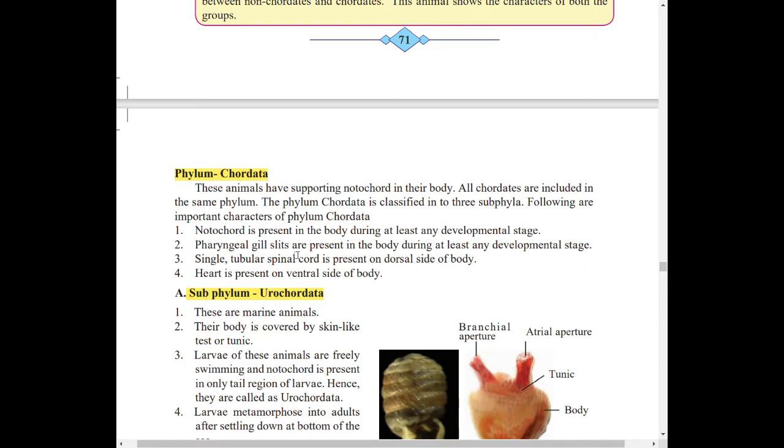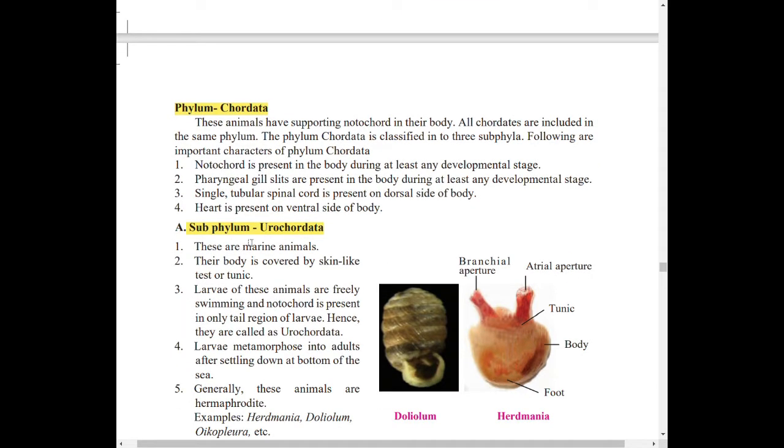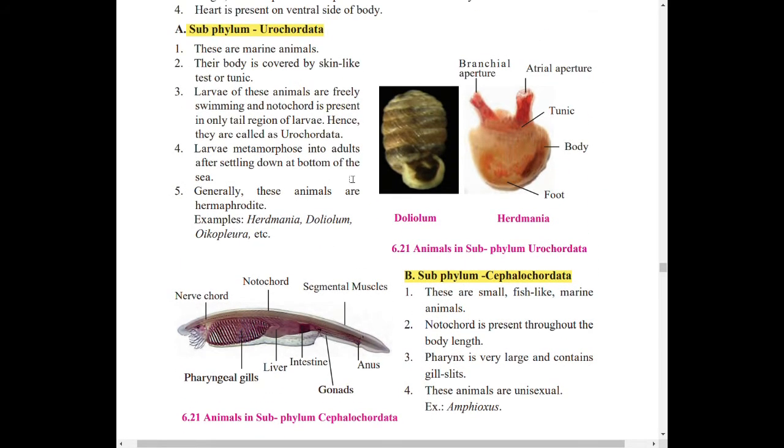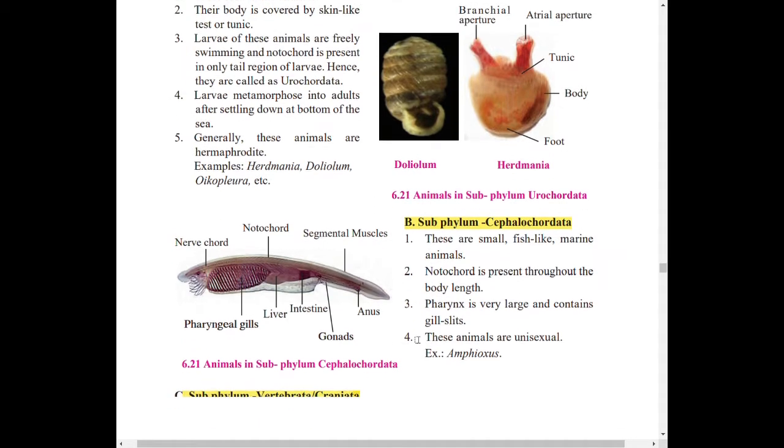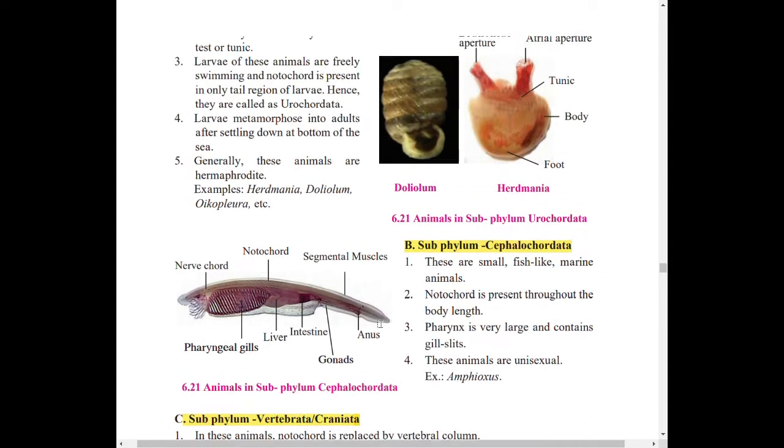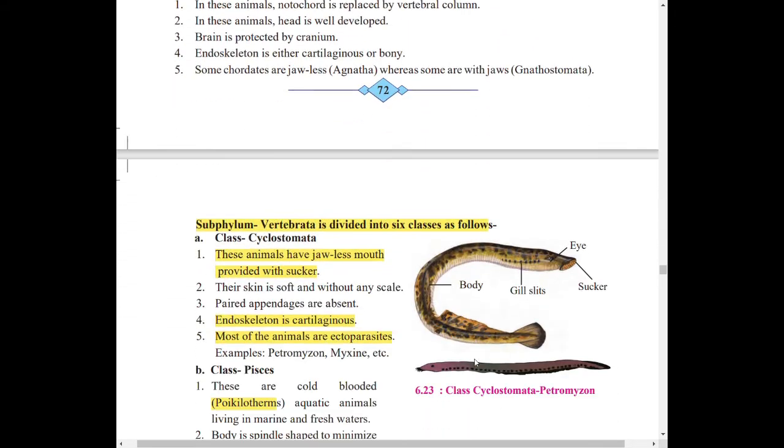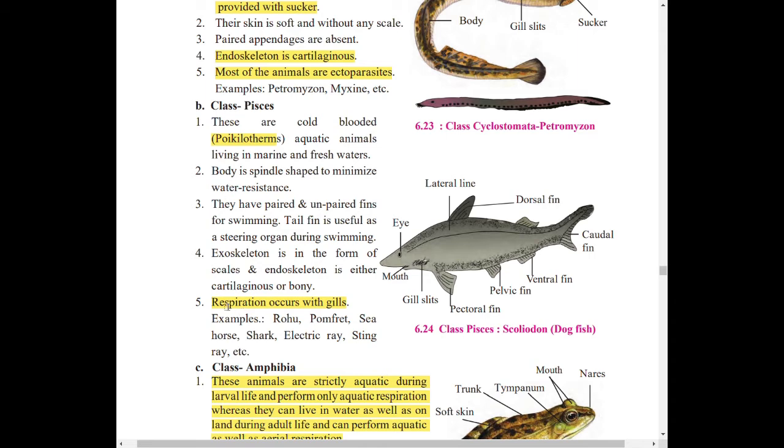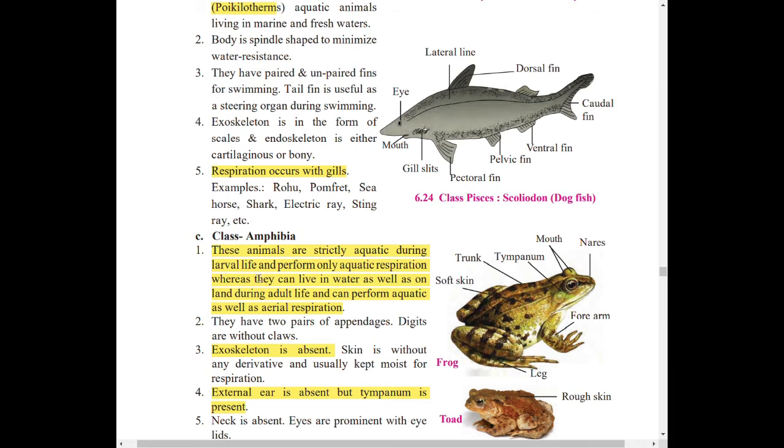Moving on to phylum Chordata. In phylum Chordata, there are three types given. All are divided into six classes. If you read all of this, you will understand everything. So go through all three properly. There are chances from these also. All the points are important in this, so I haven't marked anything specific. Whatever I've told you, make your notes accordingly.